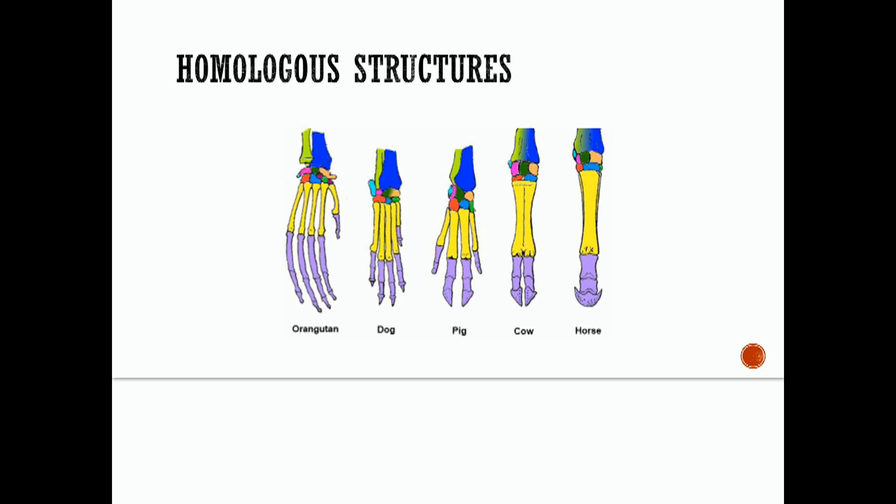Homologous structures are structures found on one species that have the same basic structure and embryonic origin as those found on other species. If homologous structures are found on two organisms, the species are related even if only distantly related. Organisms with homologous structures share a common ancestor. But at some point mutations probably contributed to the rise of the new species. So the forelimbs of these five mammals are presented here and the bones are color-coded to allow for easy comparison among these different species.